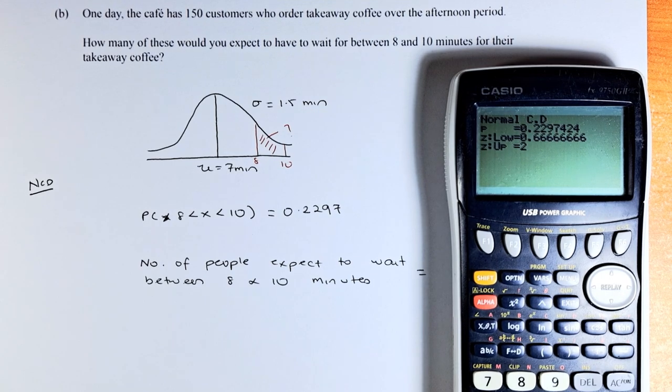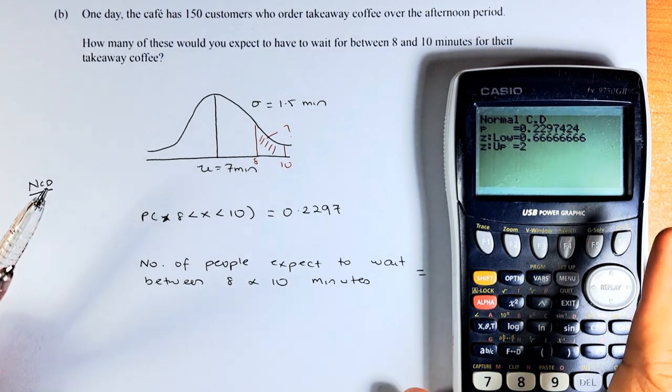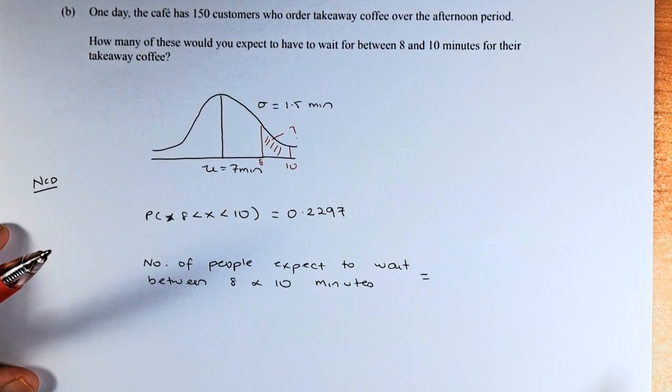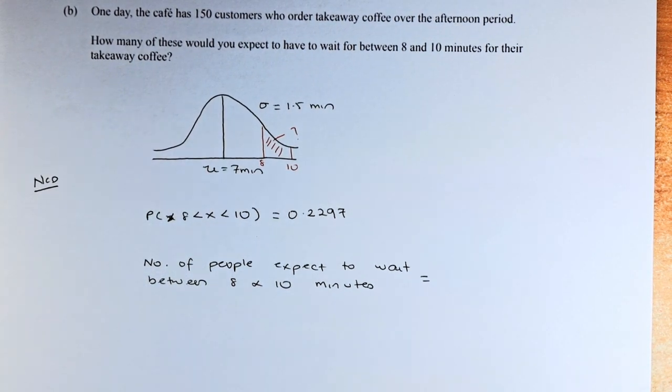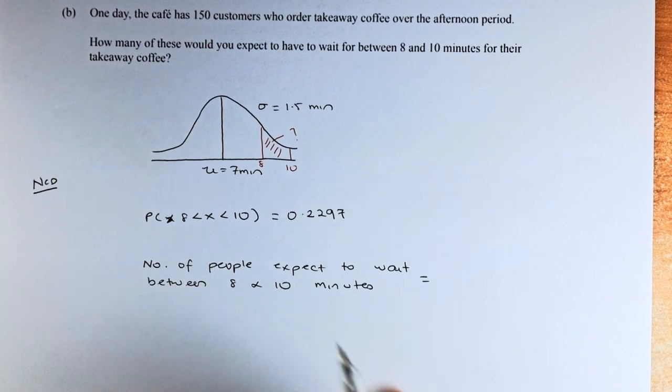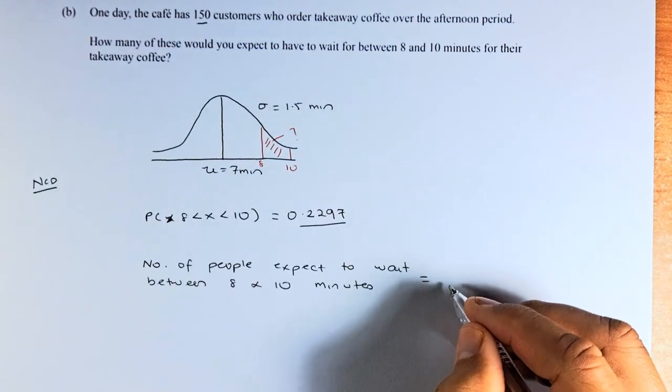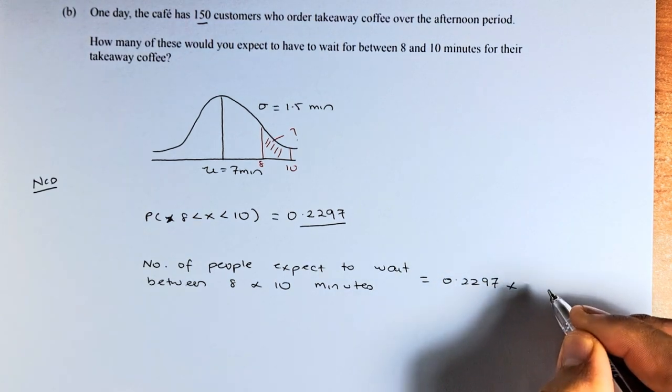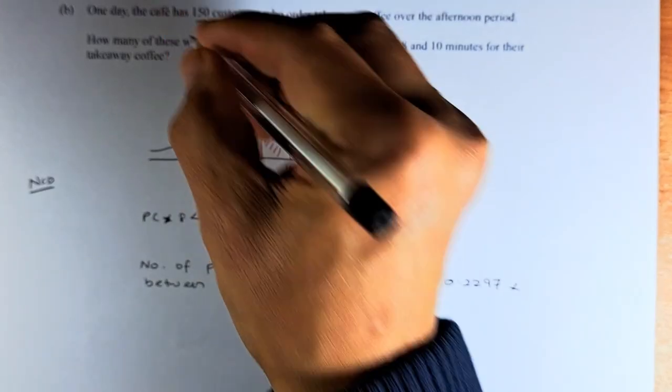Now we are going to calculate the number of people expected to wait between 8 to 10 minutes, because there are 150 customers. We just take that probability, 0.2297, multiplied by 150 people.